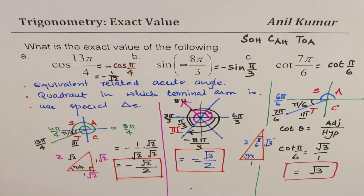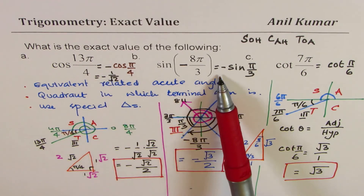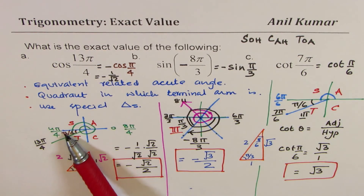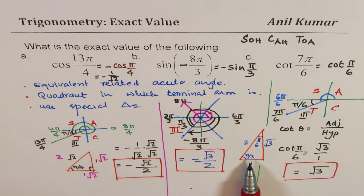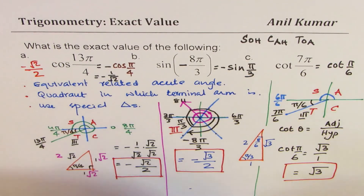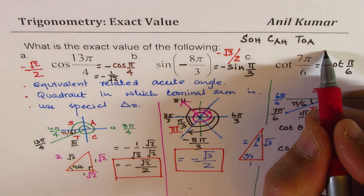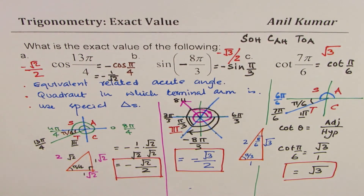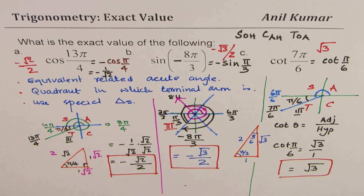To summarize: step one, figure out which quadrant you are in — the quadrant determines the sign. Step two, find the related acute angle to get the equivalent trigonometric ratio. Then use special triangles to get the exact value. The answers are: -√2/2, -√3/2, and √3. I hope that helps — feel free to share, comment, like, and subscribe. Thanks for watching!